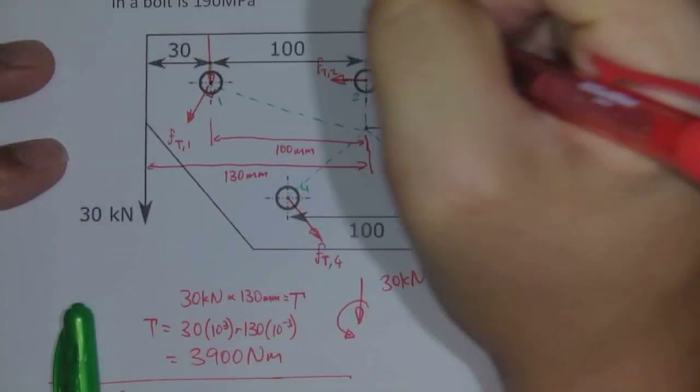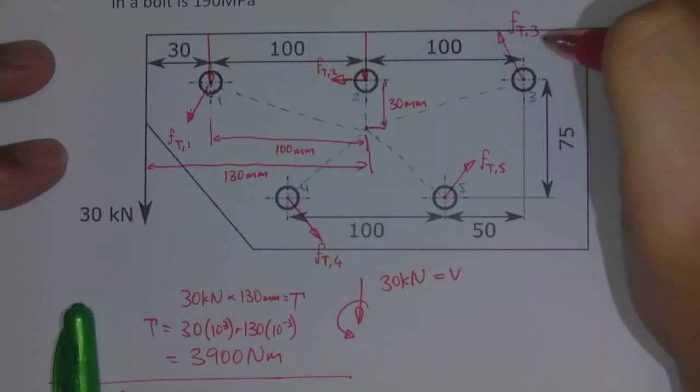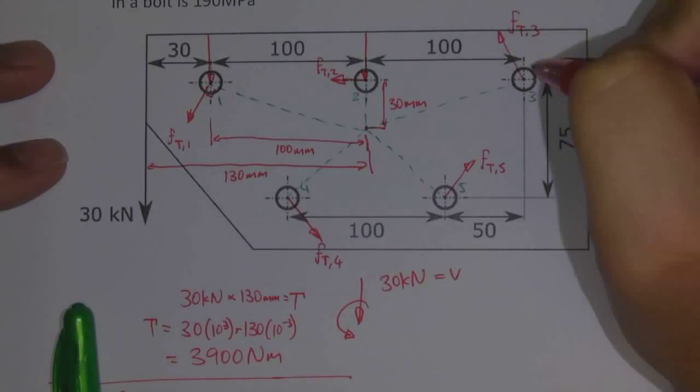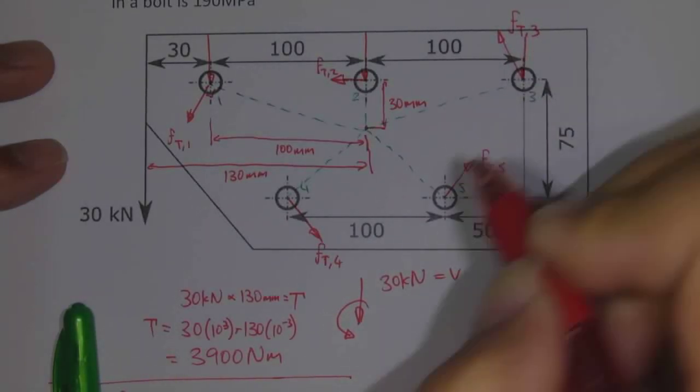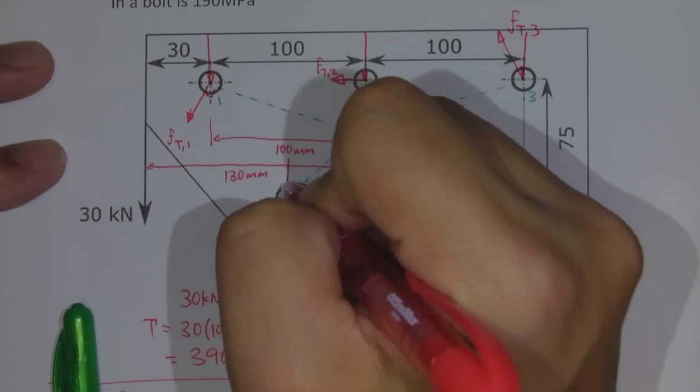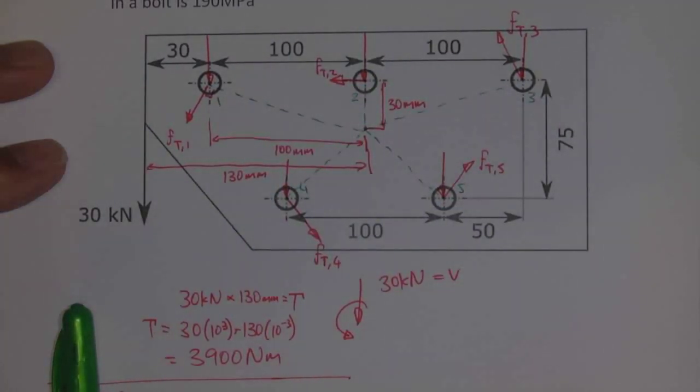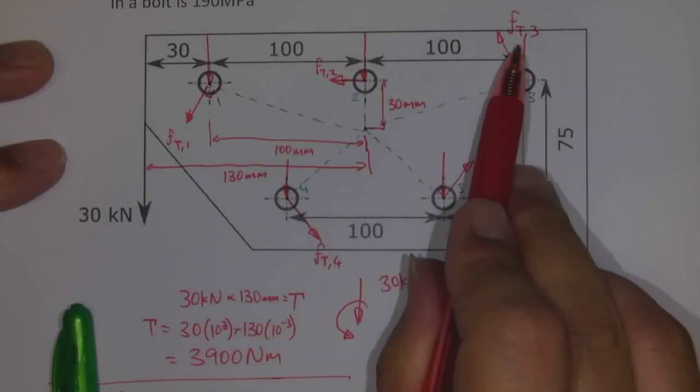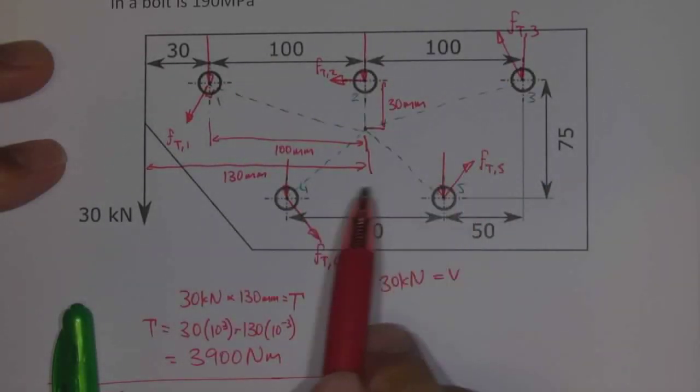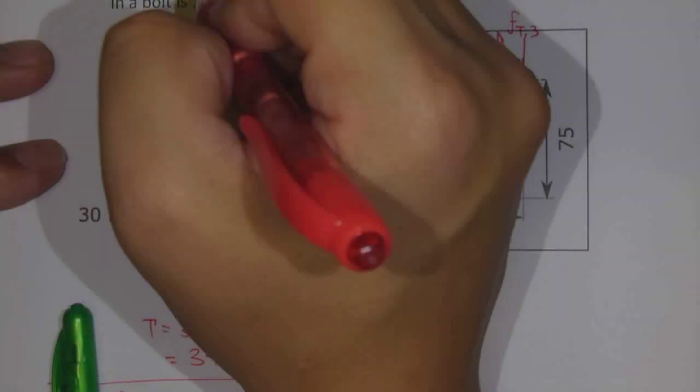So we can draw that value here on each one of these bolts, acting down, another one acting down, another one acting down, and one more acting down. The value of force for each one of these would be equal to our value of 6 kN that we calculated before.